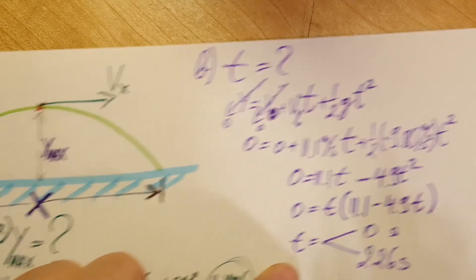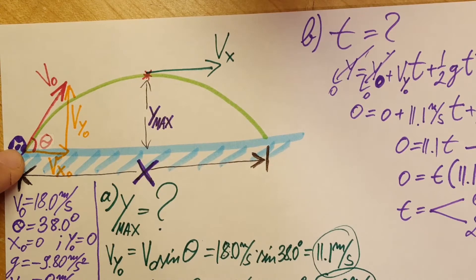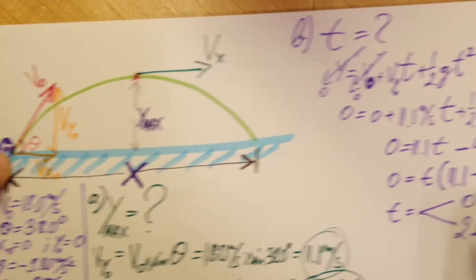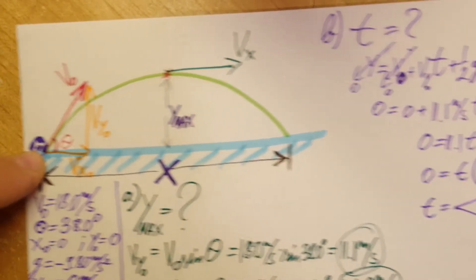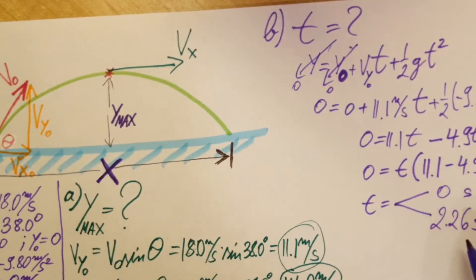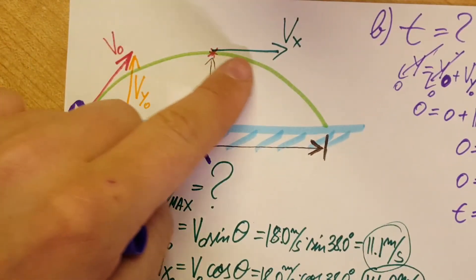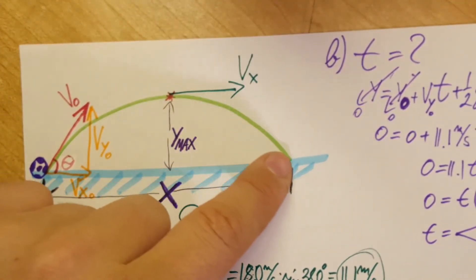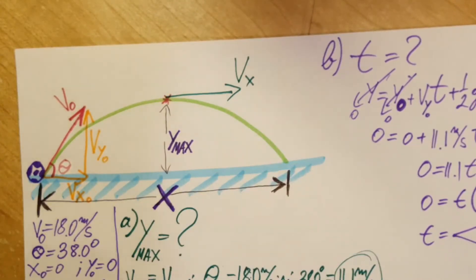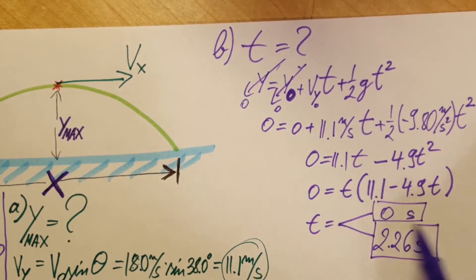Okay, now we have two times when the ball is at y equals zero. One of the times is zero seconds, which is correct, right here on the ground before it's kicked. And then the second one, 2.26 seconds, which is after, when all the way here and fell back to the ground to y equals zero again. So initial time, and our final time 2.26 seconds.